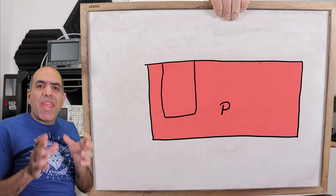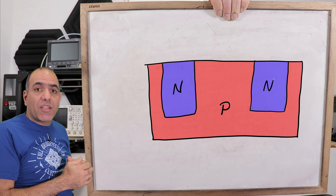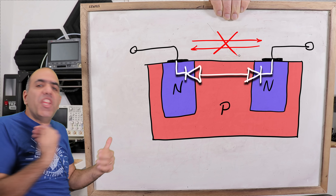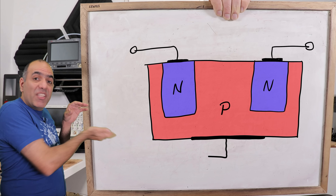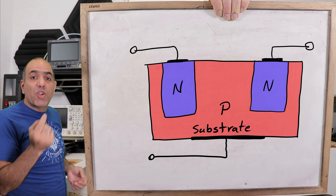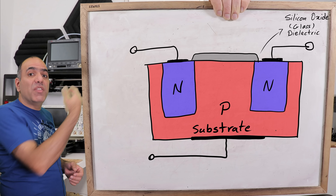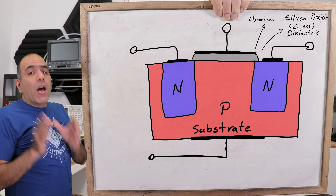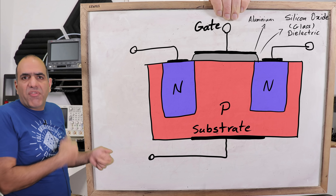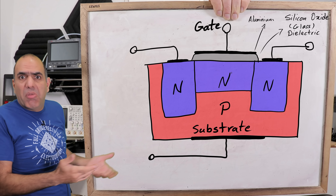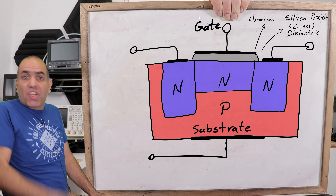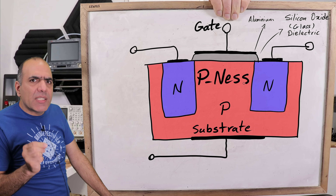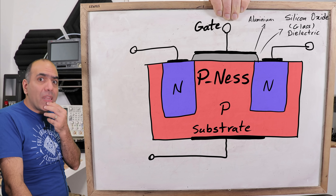Now imagine we have a big P-type silicon and we make two regions of N-type silicon on the sides and connect two terminals to it. It would be as if we have two reverse diodes back to back, so current can't flow either way. We connect another terminal to the main P-type silicon — we call it the substrate. Then we grow a piece of thin glass by oxidizing the silicon between the two N terminals for insulation, and deposit a layer of aluminum on top of it. The aluminum terminal is called the gate.